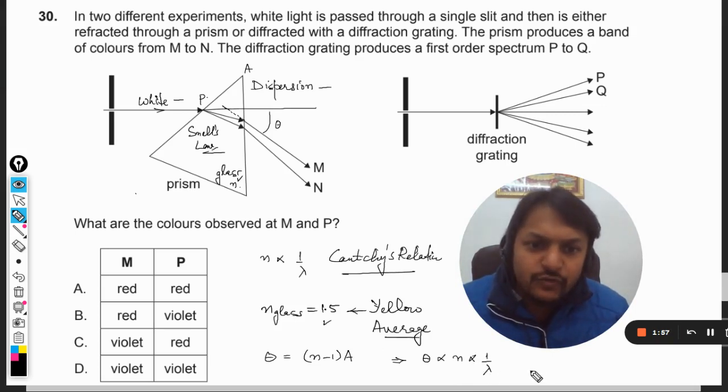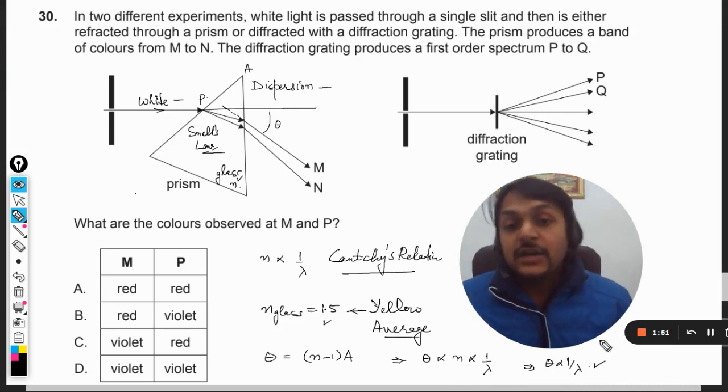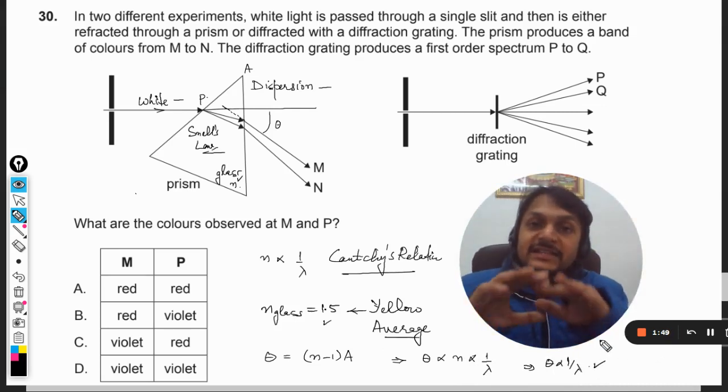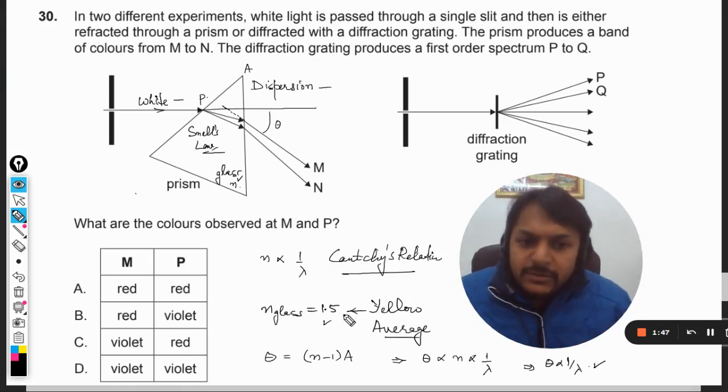Which means that θ is inversely proportional to wavelength. It only means that more is the wavelength, lesser will be the deflection. Red is having maximum wavelength, it means it would be having minimum deviation. So this is the minimum deviation and this is the maximum deviation. Maximum will be for violet, minimum will be for red.